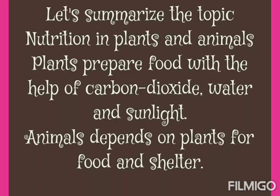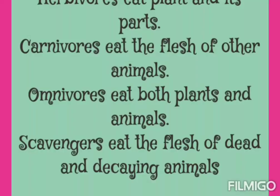Let us summarize the topic nutrition in plants and animals. Plants prepare food with the help of carbon dioxide, water, and sunlight. Animals depend on plants for food and shelter. Herbivores eat plants and plant parts. Carnivores eat the flesh of other animals. Omnivores eat both plants and animals. Scavengers eat the flesh of dead and decaying animals.